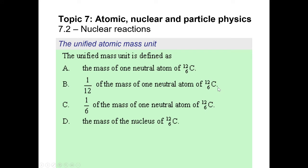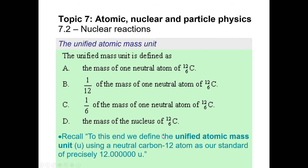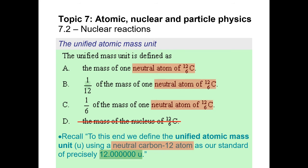MCQ: The unified mass unit is defined as — you simply have to know this. The answer is B: by definition, the unified mass unit is 1/12 the mass of one neutral atom of carbon-12.